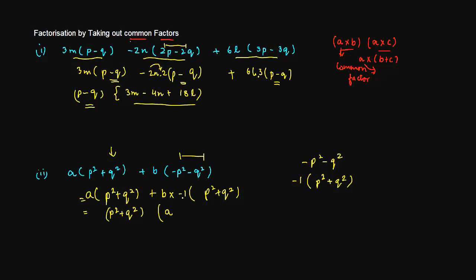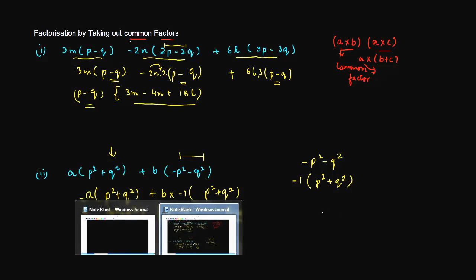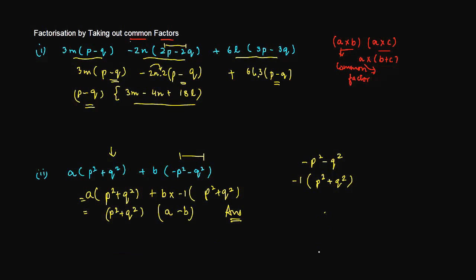Then we take (p²+q²) as common and we are left with a plus b·(−1), which gives us (a−b). So the answer is (p²+q²)·(a−b). Basically, many times in order to factorize, we take out certain common factors and simplify the expression.